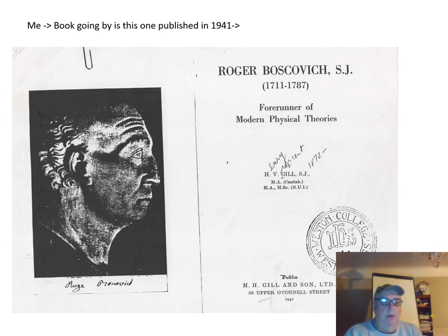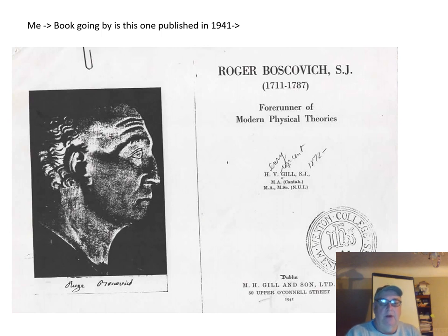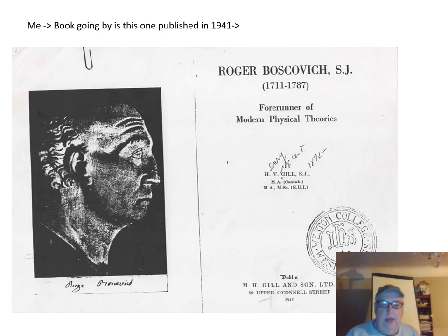I'll be going by this book published in 1941. It's called 'Roger Boscovich: Forerunner of Modern Physical Theories' by H.V. Gill.